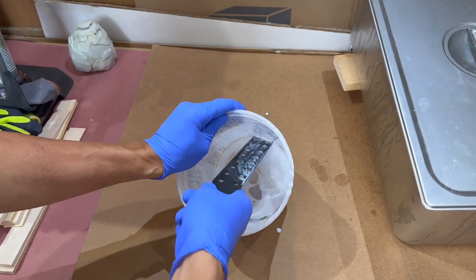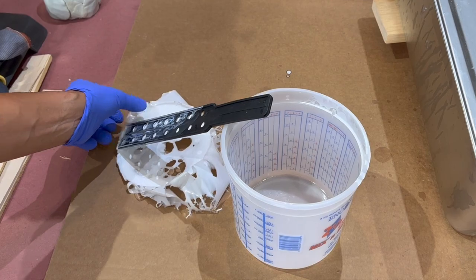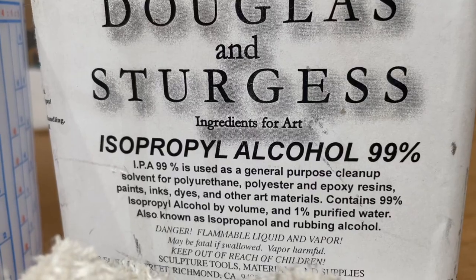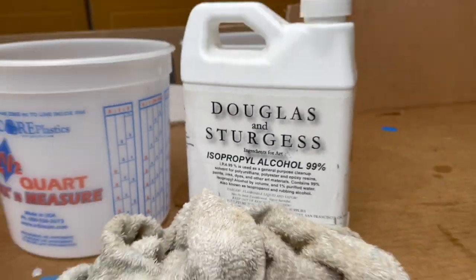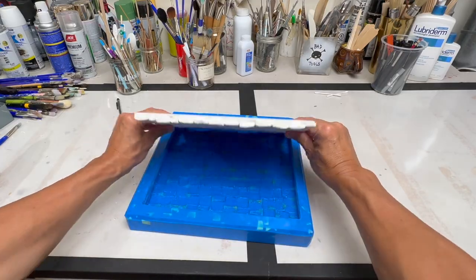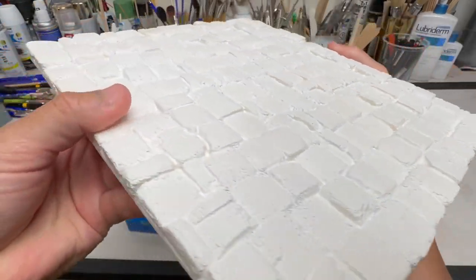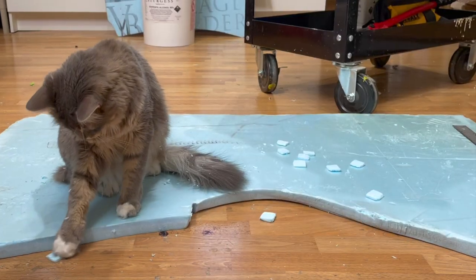You can also easily remove the leftover resin from those cool measuring containers that I also linked in the description. You can wipe down your buckets with some isopropyl alcohol and they'll look brand new. In part three of this series I'll show you how to pour a resin positive. If you'd like to check that out click the link right here. Thanks for watching.